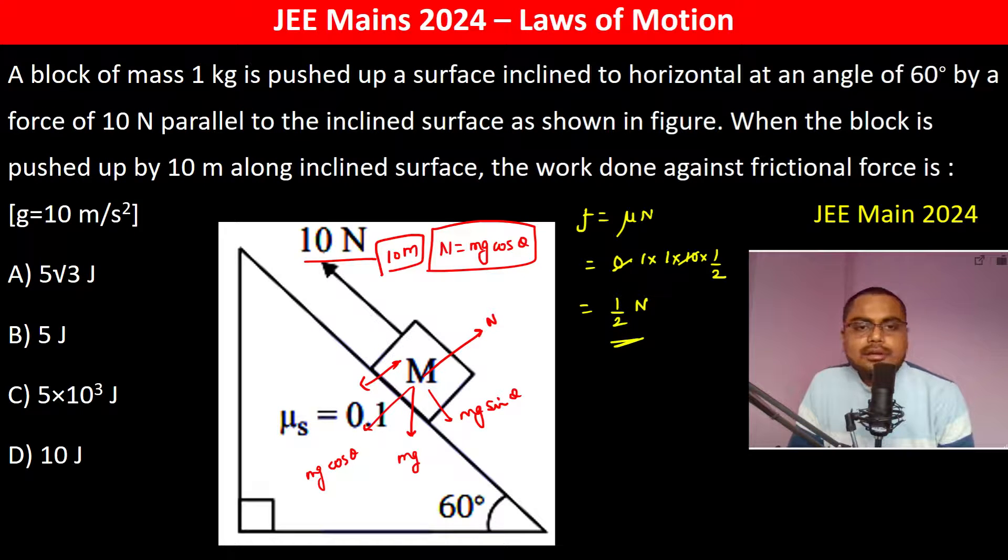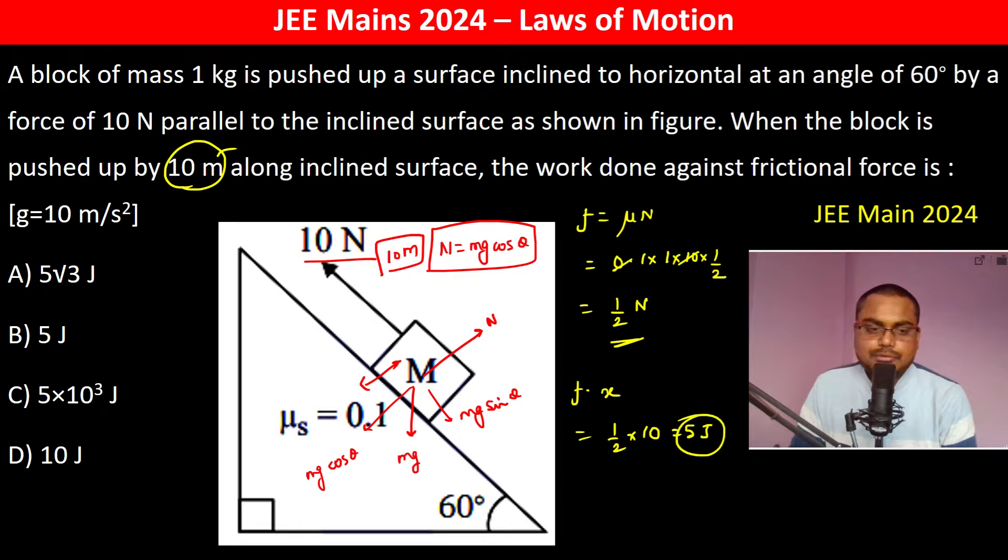And we are taking it to 10 meter. So f into x, where x the displacement is 10 meter. So half into 10, which is 5 joules.